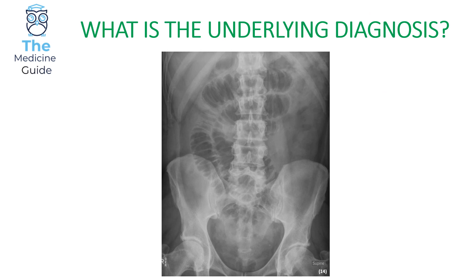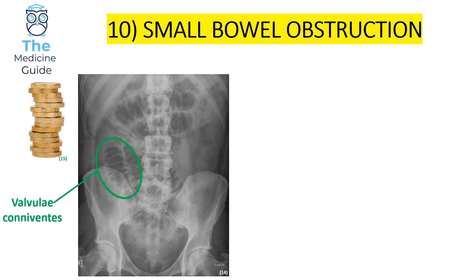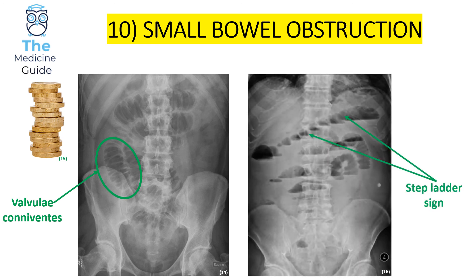Let's have a look at number ten, our final imaging quiz of the day. This is an example of a small bowel obstruction. Small bowel obstruction classically presents on an abdominal x-ray with the presence of valvulae conniventes, which to me looks similar to a stack of coins — I've got a picture of a stack of coins to compare against the valvulae conniventes. Another key finding of small bowel obstruction is the stepladder sign, pictured in the far right-hand corner.